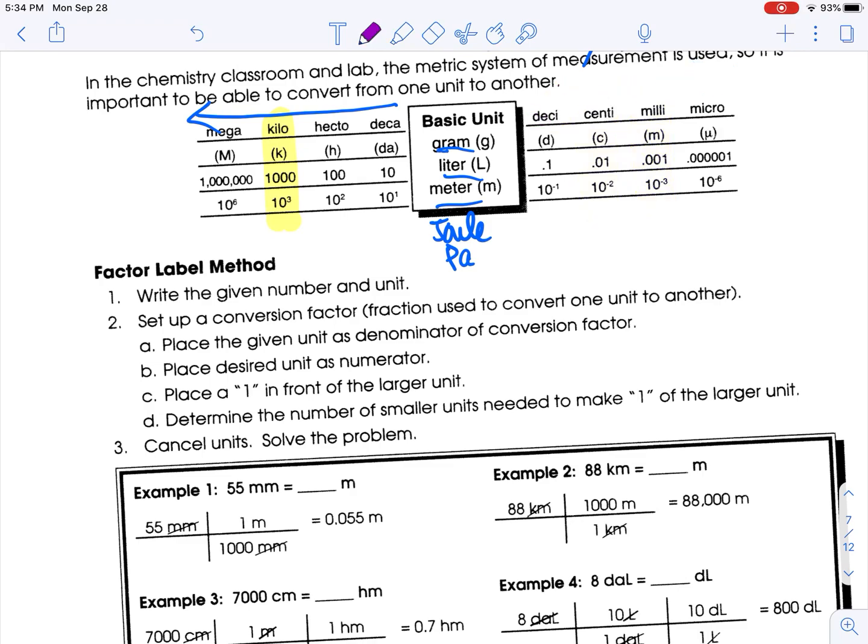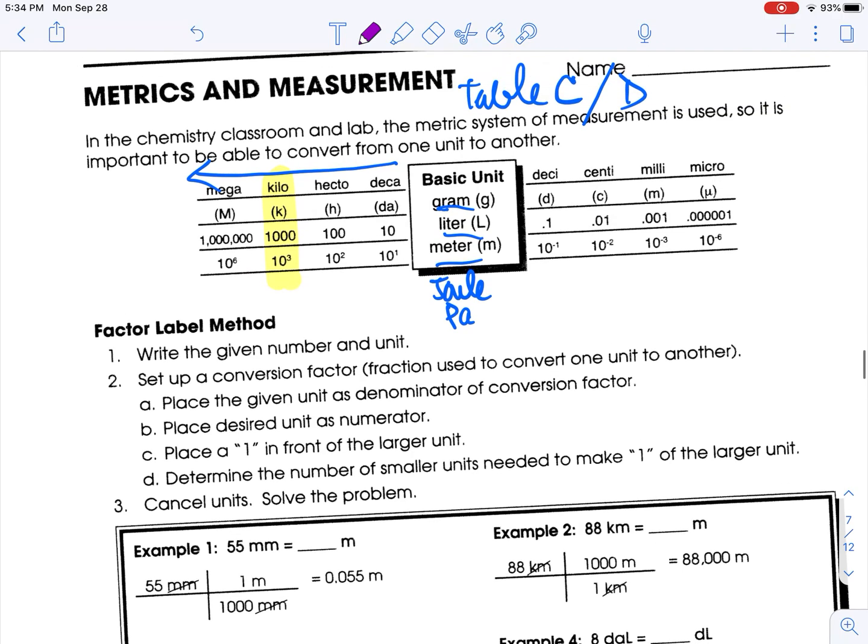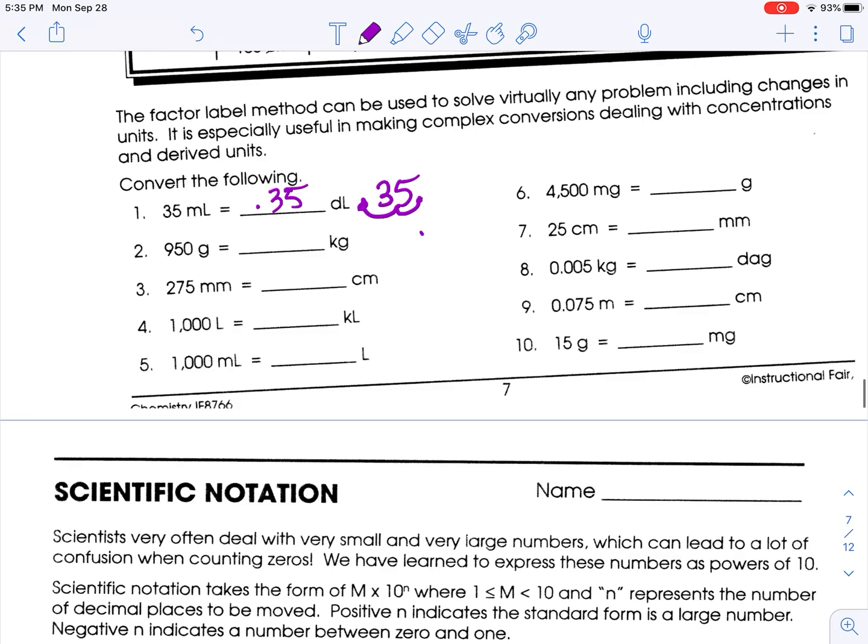All right, the next one is 950 grams to kilograms. So here's grams, it's base. We need to go to kilograms. We're going to move our decimal place. One, two, three. So 950. Move my decimal place three spots. One, two, three.